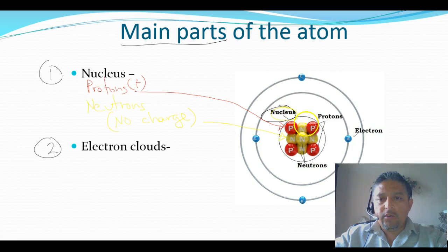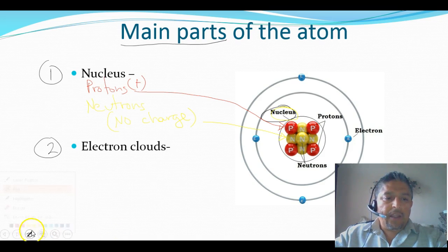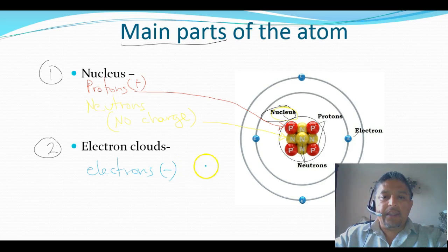You can see right here it says nucleus showing this circle around with the particles inside. Now the other one that is outside the nucleus floating around on the electron clouds are the electrons. And those come in blue. So we are going to be putting here electrons. These ones have a negative charge and are located outside the nucleus of the atom, floating around on the electron clouds.